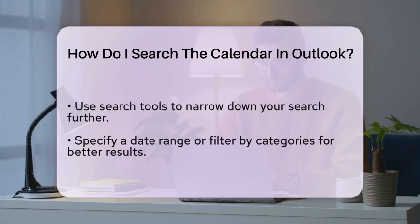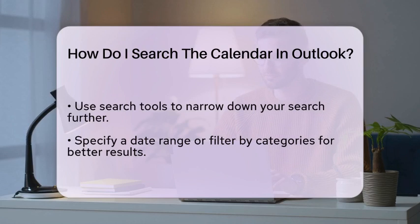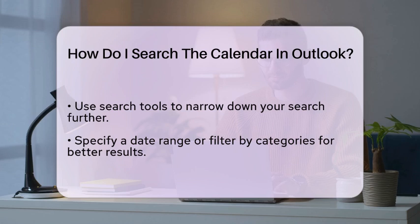If you want to narrow down your search further, you can use the search tools available in Outlook. These tools allow you to specify a date range or filter by categories, making it easier to locate specific events. After you have entered your search parameters, hit the Enter key or click on the search icon to view the results.